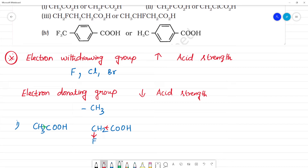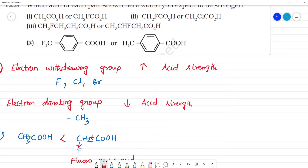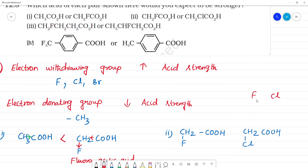The electron withdrawing group will be able to remove H plus ion more easily, giving more acidic strength. Next, the second comparison: CH2FCOOH and CH2ClCOOH. The comparison here is fluorine versus chlorine. Fluorine is more electronegative, so it is a stronger electron withdrawing group, and fluoroacetic acid will have more acidic strength.